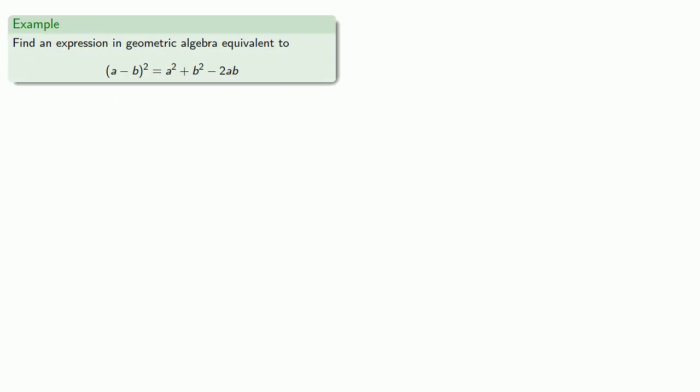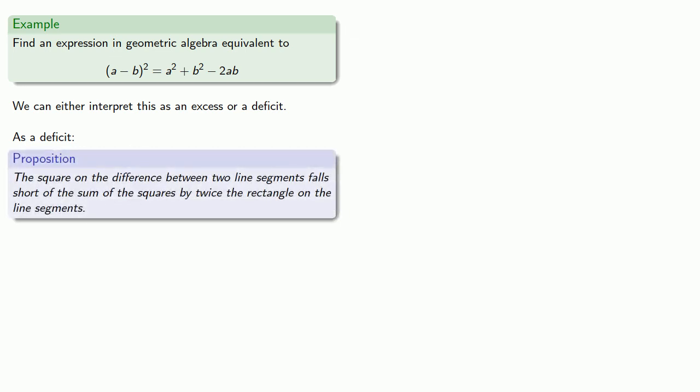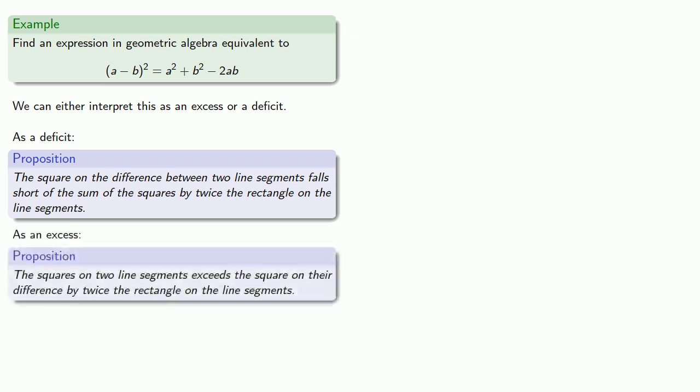There's a third way to handle negative quantities, and that's to interpret them as an excess or a deficit. For example, the statement 8 equals 13 minus 5 could be read as 8 falls short of 13 by 5, or that 13 exceeds 8 by 5. And so that gives us another way to express a subtracted quantity in geometric algebra. So we could express it as a deficit: the square on the difference between two line segments falls short of the sum of the squares by twice the rectangle of the line segments. Or we could also express it as an excess: the squares on two line segments exceeds the square on their difference by twice the rectangle on the line segments.